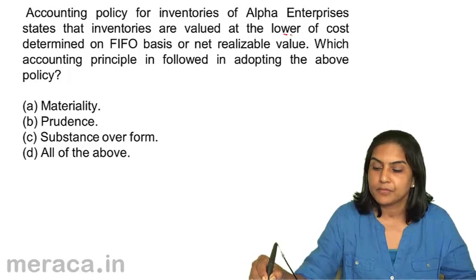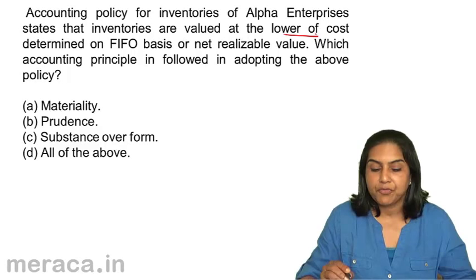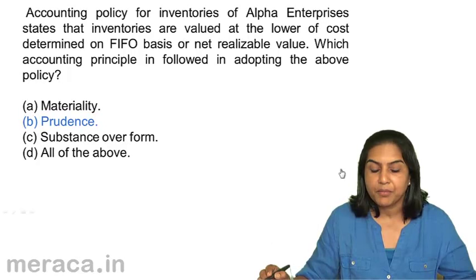Lower of cost or net realizable value — therefore, we are talking of prudence. The correct answer should be B. Prudence.